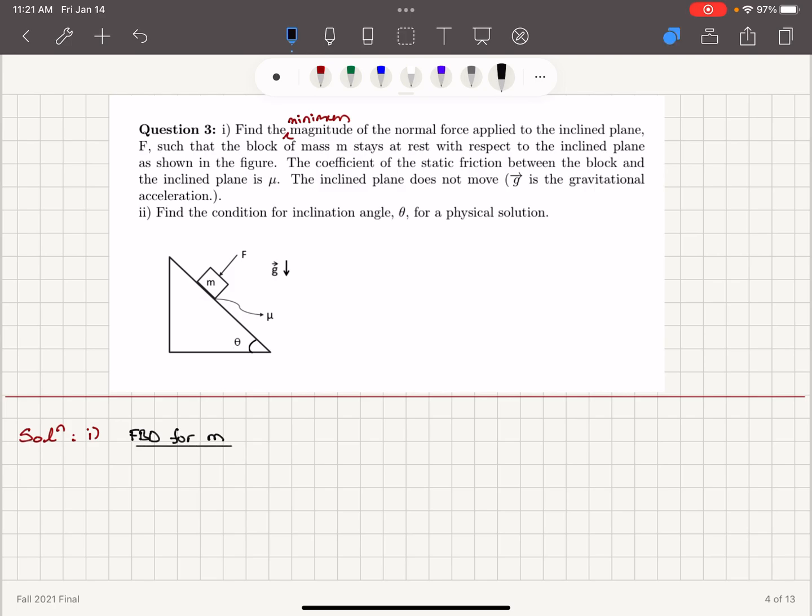All right, so on the figure I can show you here that we have the gravitational force Mg pointing down. You can see this angle is 90 minus theta. Therefore, it's going to make an angle theta with the normal to the inclined plane. So we're going to draw the weight Mg pointing down.